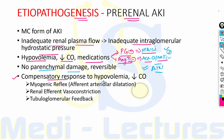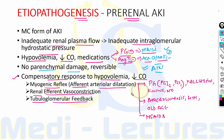Compensatory responses during mild hypovolemia and decreased cardiac output include the myogenic reflex (afferent arteriolar dilation), renal efferent vasoconstriction, and tubuloglomerular feedback. The myogenic reflex is mediated by prostaglandins like prostacyclin and PGE2, kallikrein-kinins, and nitric oxide. In conditions like atherosclerosis, long-standing hypertension, and older age causing hyalinosis and myointimal hyperplasia, this myogenic reflex is impaired. NSAIDs also impair this reflex by inhibiting prostaglandin synthesis.